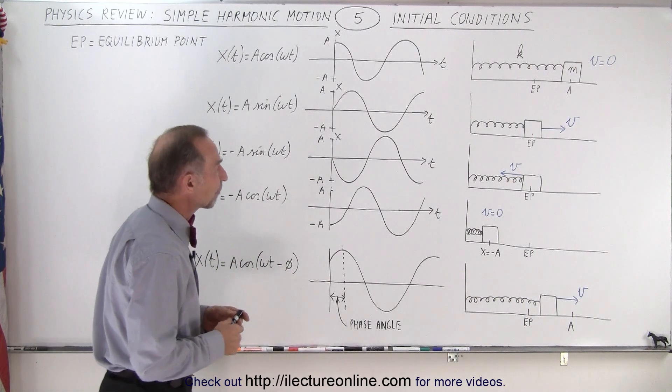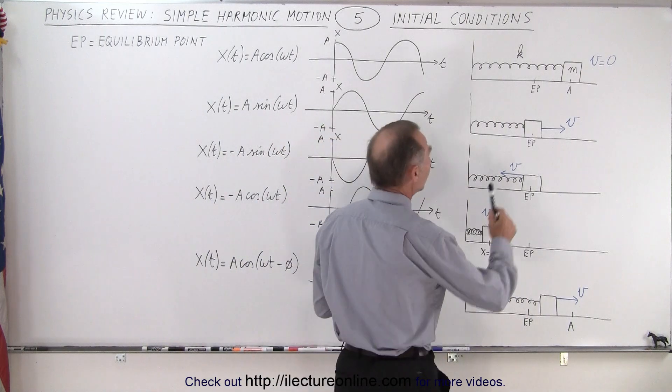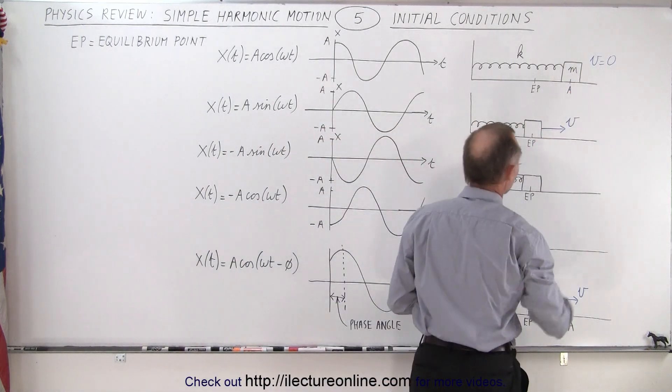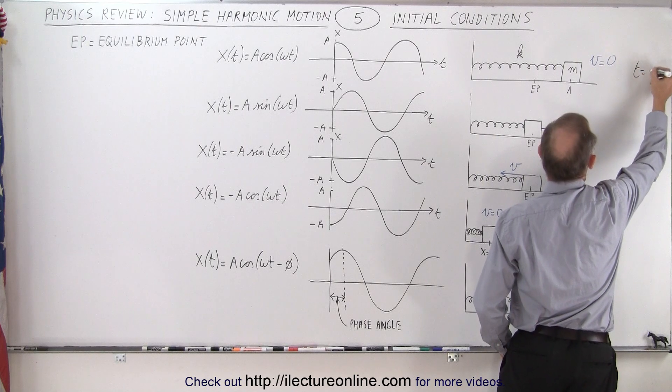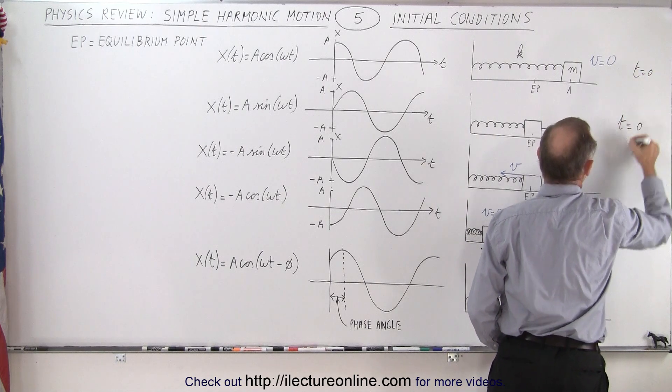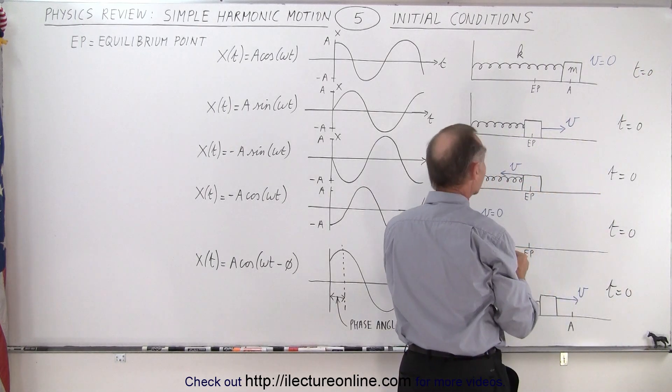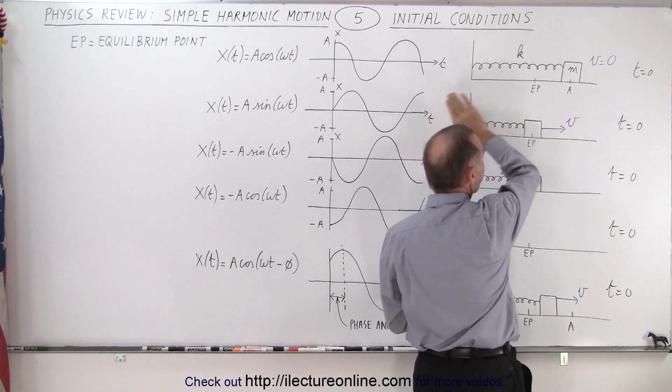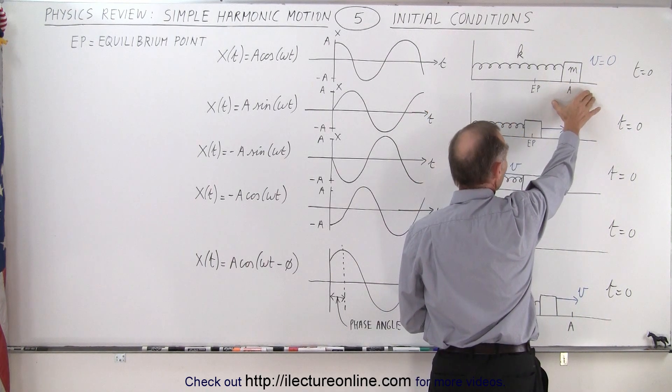So here we have five situations, all representing when time equals zero. In the first case, the object is at maximum distance away from the equilibrium point to the right.